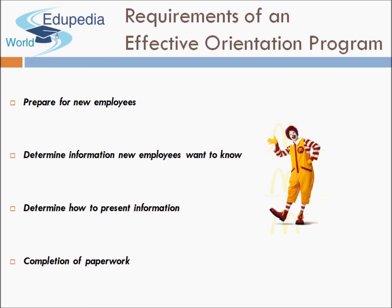The orientation conveys broadly three types of information: about the daily work routine; a review of the firm's history and a description of how the employee's job contributes to the organization's needs; and the organization's policies and procedures. Everything the employee needs to know is told during this time. The requirements of an effective orientation program are: prepare for new employees, determine information new employees want to know, determine how to present information, and completion of paperwork.